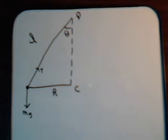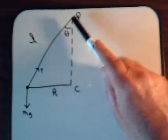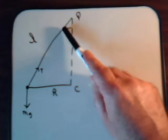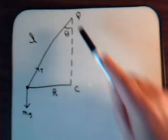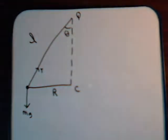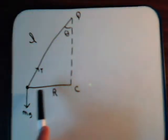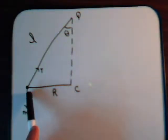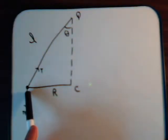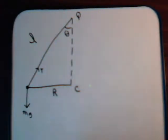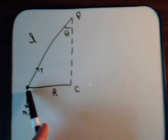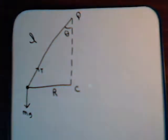Here's the essence of our setup. The string of length L makes an angle of theta with the axis of rotation. The circle has radius R, and here's M, the mass, with gravity pulling straight down. And here's the tension.